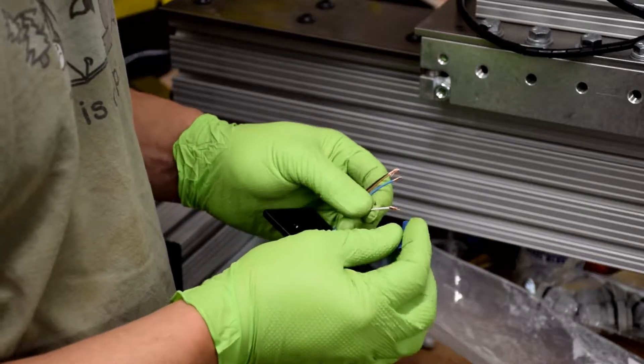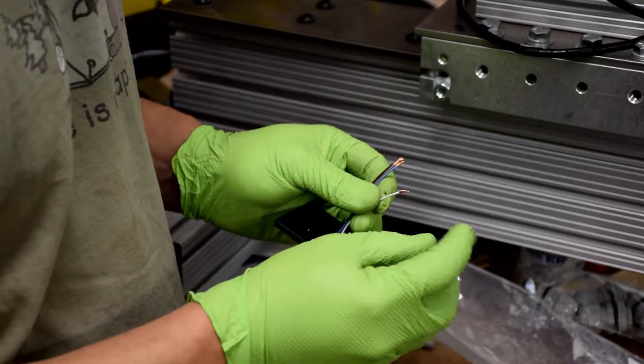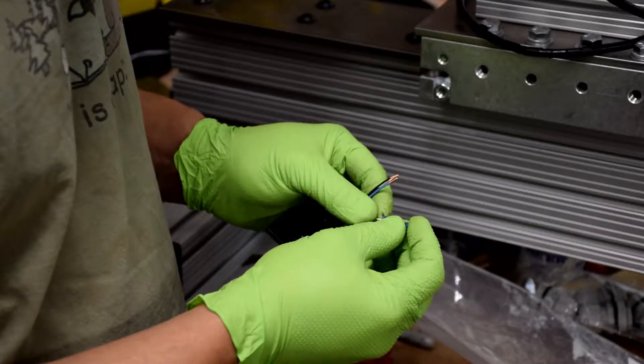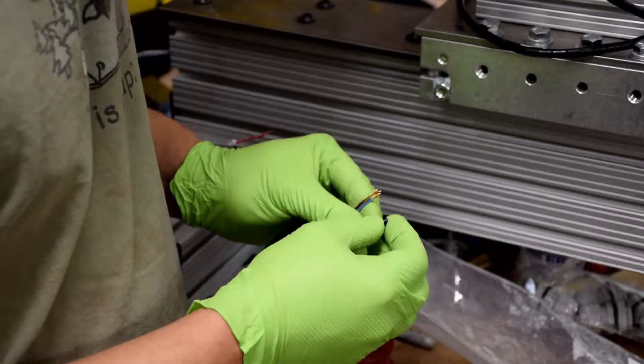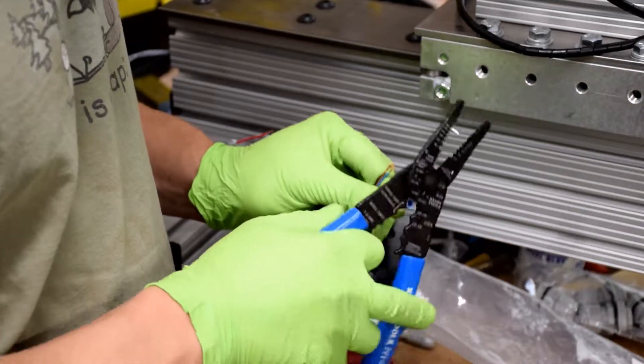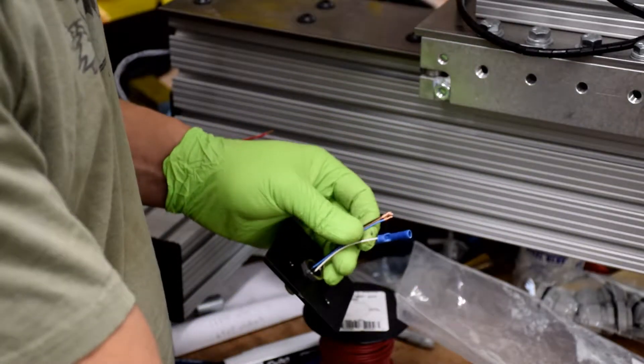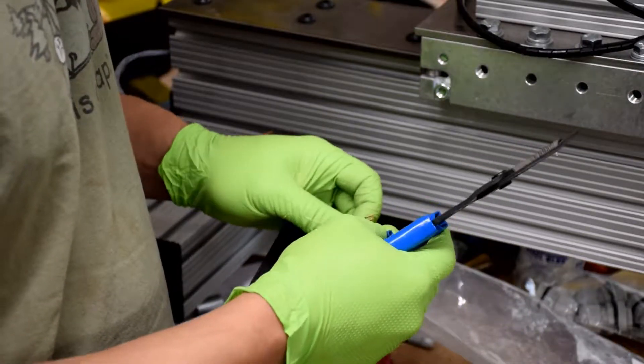We're going to connect the bulkhead wires to the wires running through the lathe with some butt splices. You can just pick these up at the hardware store, slide it over the end of the wire, and crimp it. Repeat that for the rest of the wires.